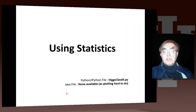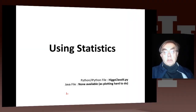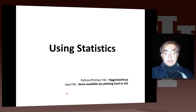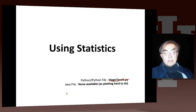Hello, this is Jeffrey Fox. Now we have the last lesson in the third unit of the physics use case. Let's describe some aspects of using statistics in physics. This is illustrated by the file Higgs class 3.py, which is available on FutureGrid and on the files tab of the online class.